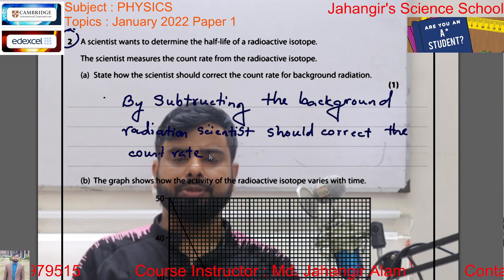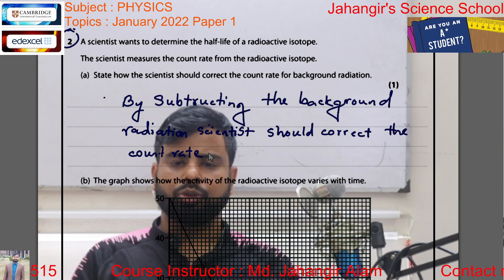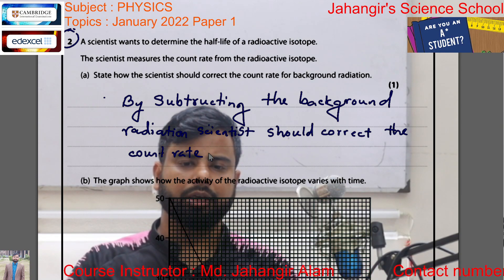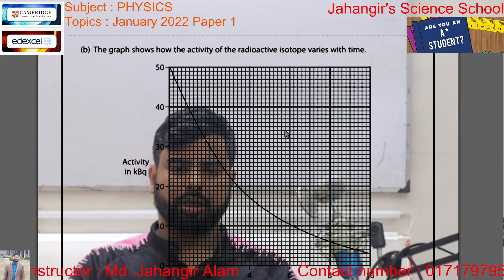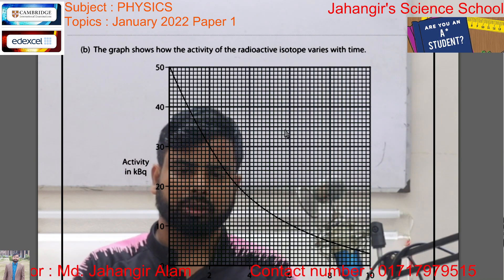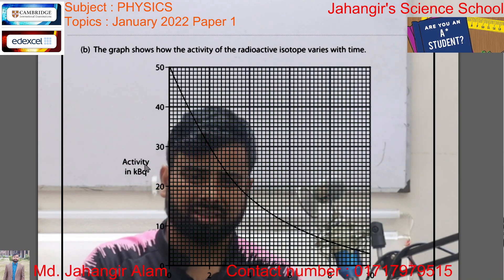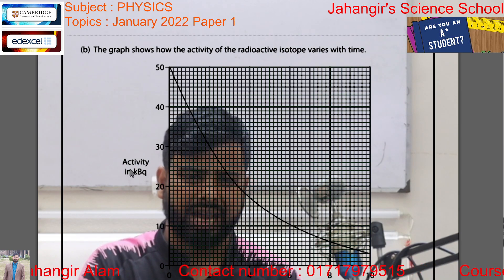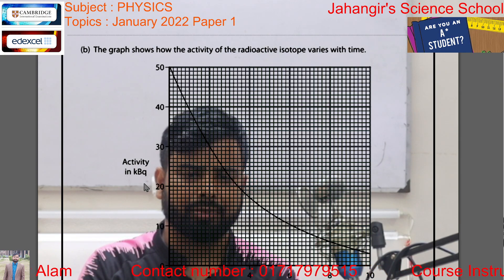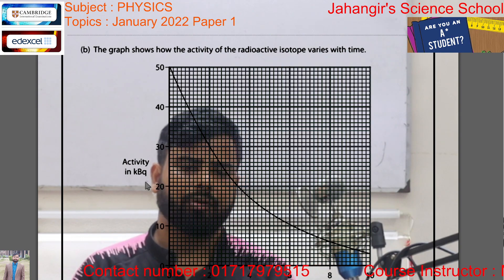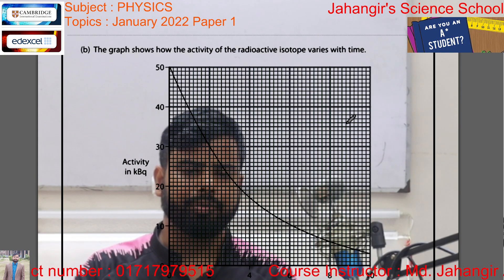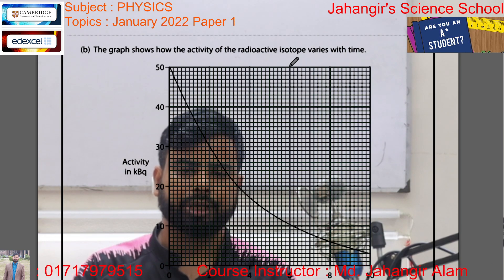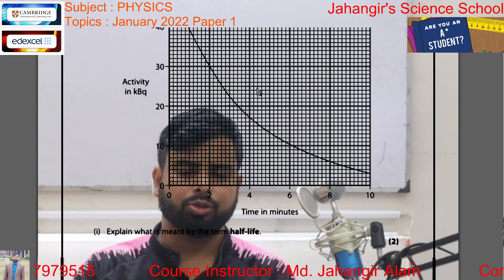So, by subtracting the background radiation, the scientist should correct the count rate. Now, look at the graph — the activity in kilobecquerel on the y-axis and time in minutes on the x-axis. The graph shows how the activity of the radioactive isotope varies with time.